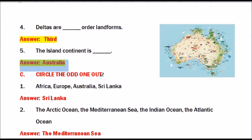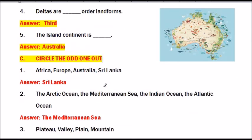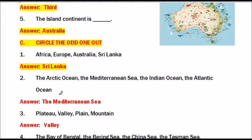Moving to question C: Circle the odd one out. Question 1: Africa, Europe, Australia, Sri Lanka. The answer is Sri Lanka. Question 2: Arctic Ocean, Mediterranean Sea, Indian Ocean, Atlantic Ocean. The answer is Mediterranean Sea.